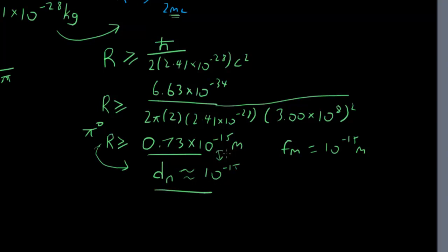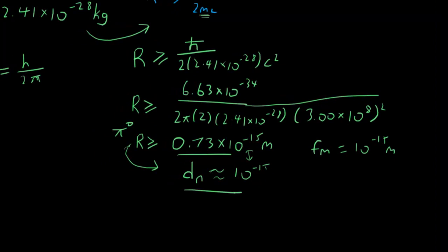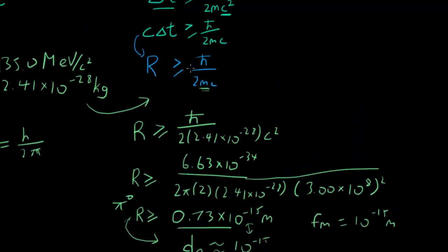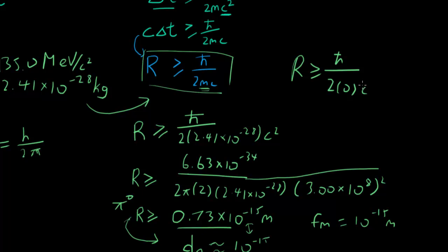From this equation, we can tell why the range of a photon is unlimited. Because the photon has zero mass. So if we put in ℏ over 2 times zero times c, anything over zero is infinite, so the range is infinite. There we go. That's why the photon has unlimited range.